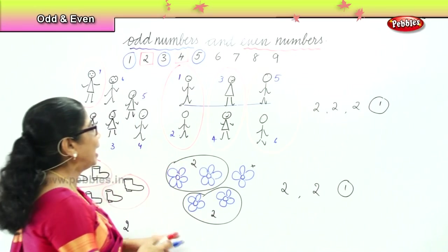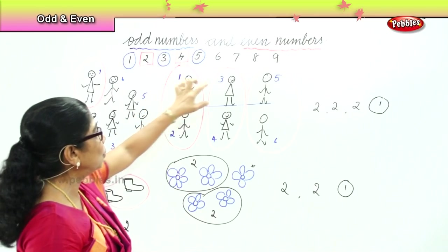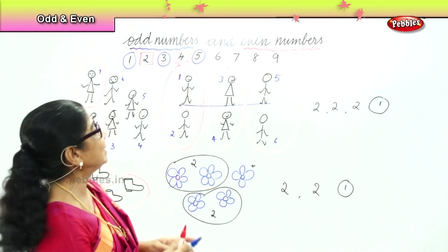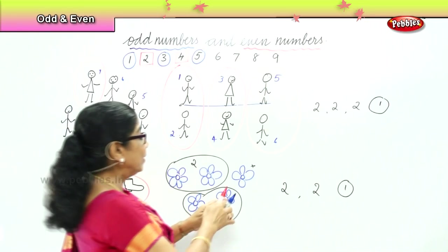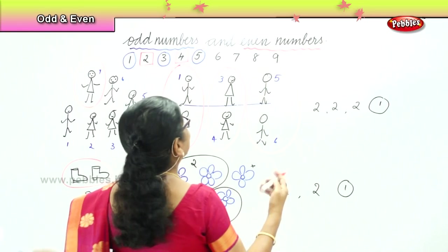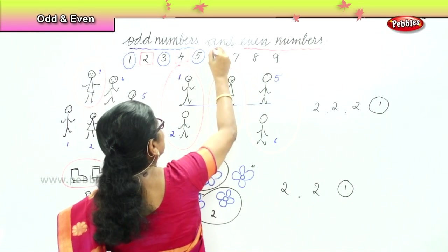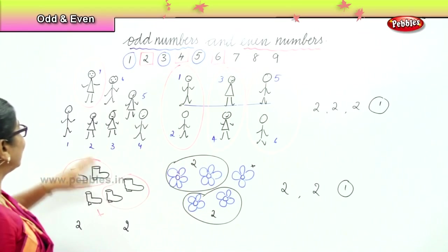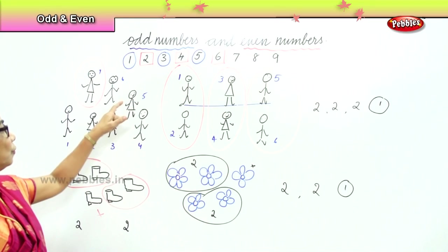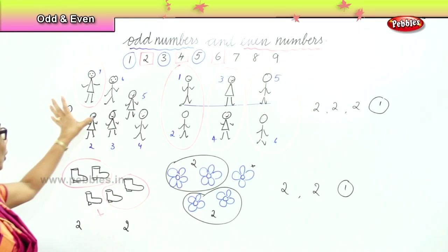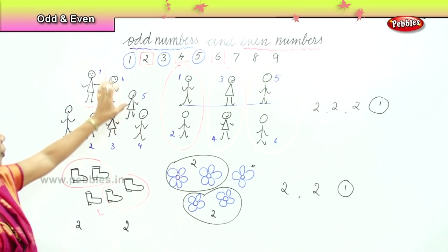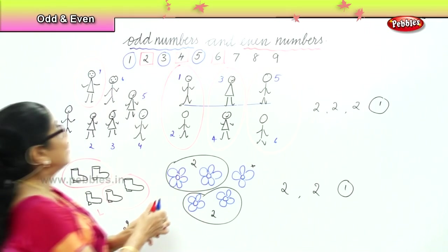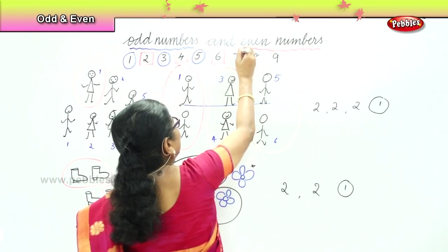Then six. Here we have one and two, one and two, one and two — two, two, two. Six is definitely an even number; it can be paired up. What about seven? One, two, three, four, five, six, seven. One and two, three and four, five and six — and again seven is odd. So seven is an odd number.